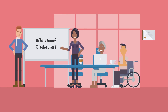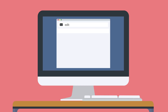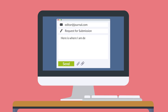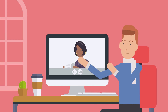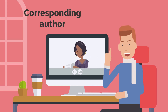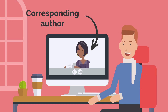Once all the authors have signed off on the draft and provided their affiliations and disclosures, it's time to submit to the journal. The lead author writes a cover letter to the journal's editor that describes how the paper fits the journal's scope and readership, and the lead author provides the files for submission to the team's corresponding author, who is usually the senior researcher on the team.